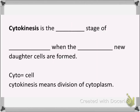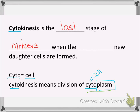Our next term is cytokinesis. Cyto equals cell — that's why we have cytoplasm, which is the jello-like goo that holds everything together in a cell. Cytokinesis is the last stage of mitosis when the two new daughter cells are formed. Cytokinesis literally means division of the cytoplasm.